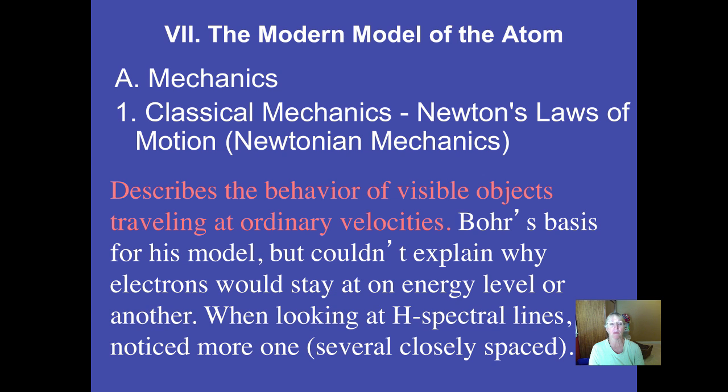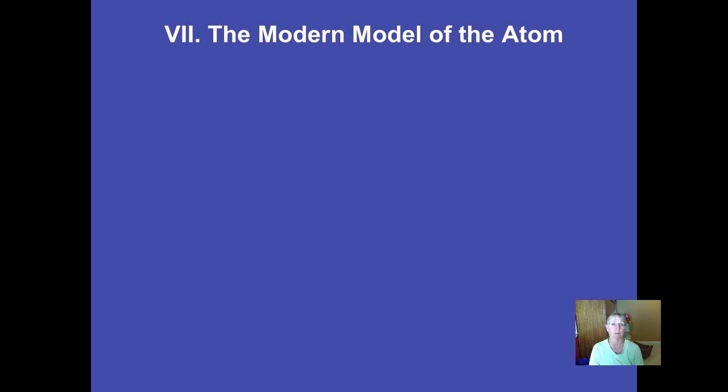Bohr's model couldn't necessarily explain why the electrons would stay at one energy level or another. One of the fallacies of his model is if you looked really close at some of those spectral lines, you could see maybe two lines that at first glance appeared to be one. So we're starting to see some problems in his model, even though it was a Nobel Prize winning experiment.